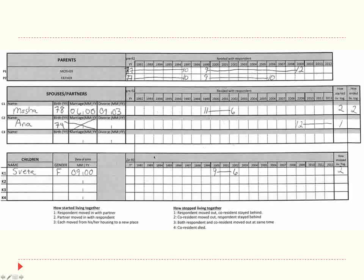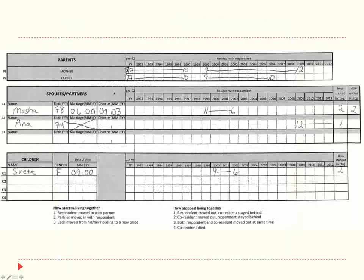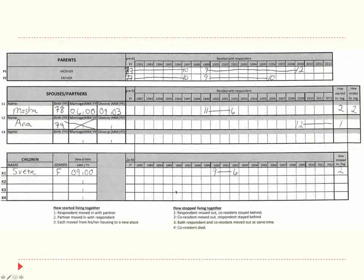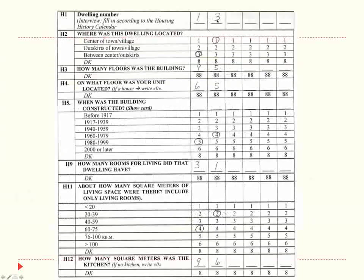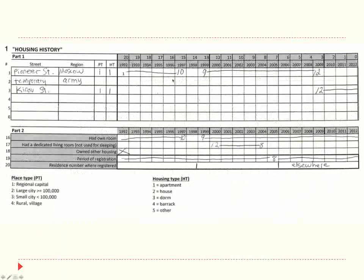We can then use the housing history to help anchor memories of who they were living with — when they were living with their mother, their father. This also helps them remember things like the date of their father's death. The calendar can then cross-reference spousal and partnership histories, sibling histories, and so on. The key point is we don't try to record everything on these calendars — just enough to provide a visual frame of reference. There is very strong experimental evidence that this leads to more accurate memory and more accurate reporting if the interviewers are properly trained. It also helps the interviewer check for gaps or overlaps in timelines.